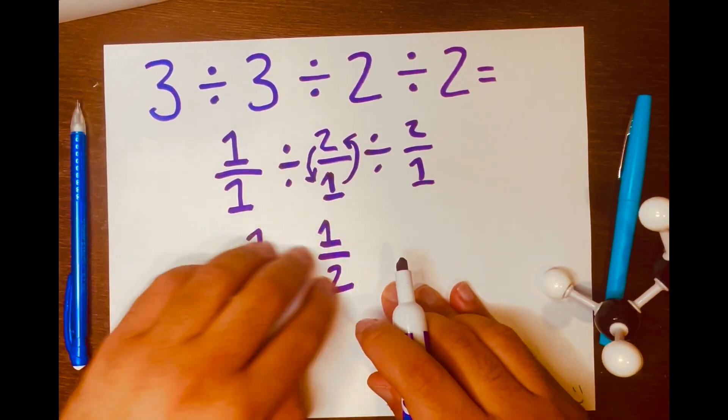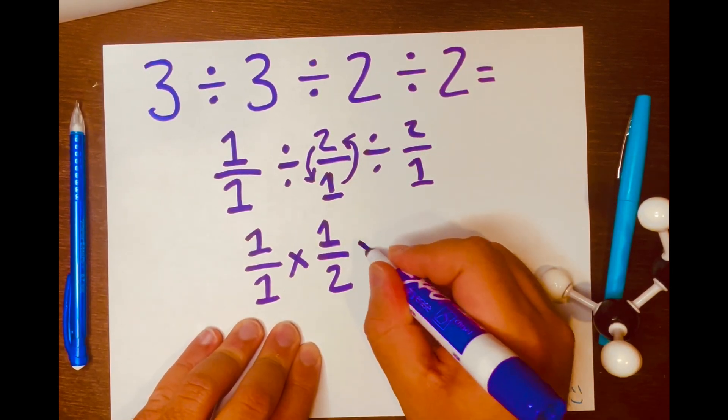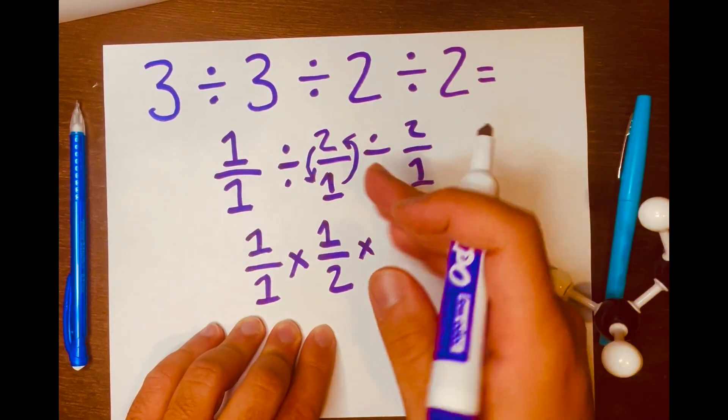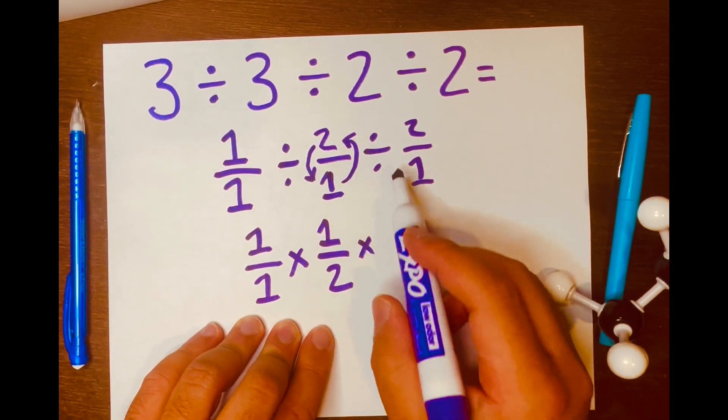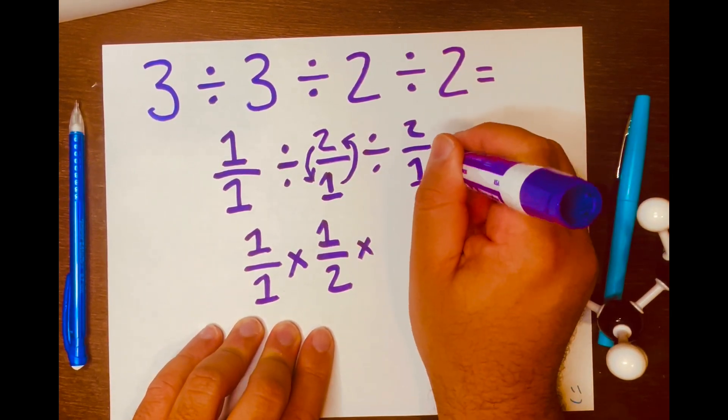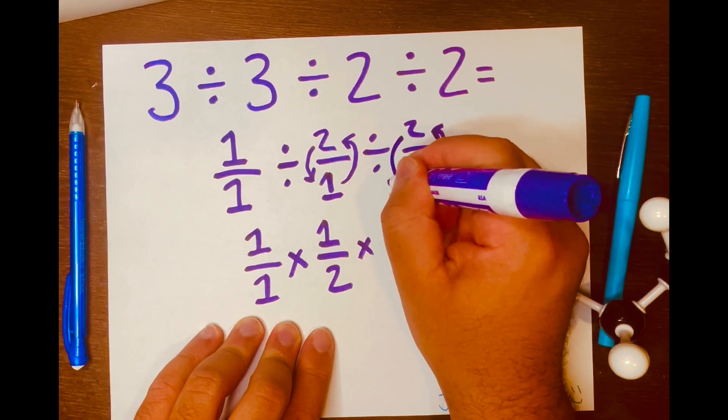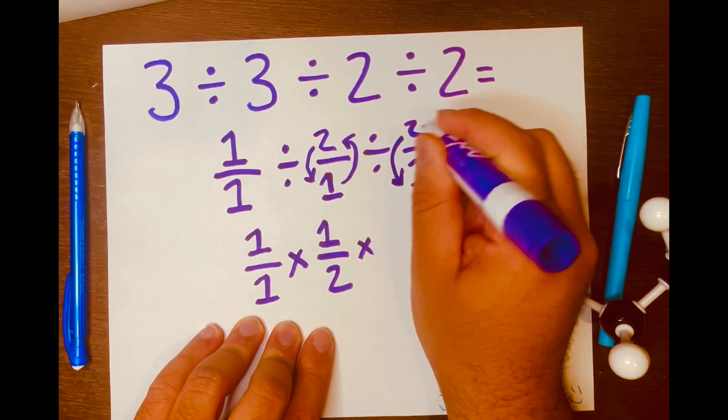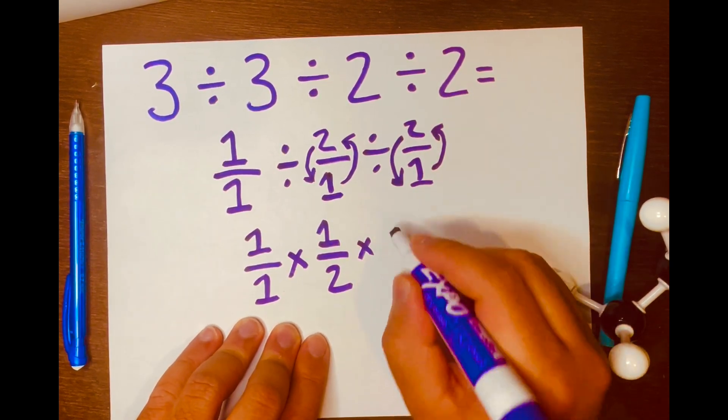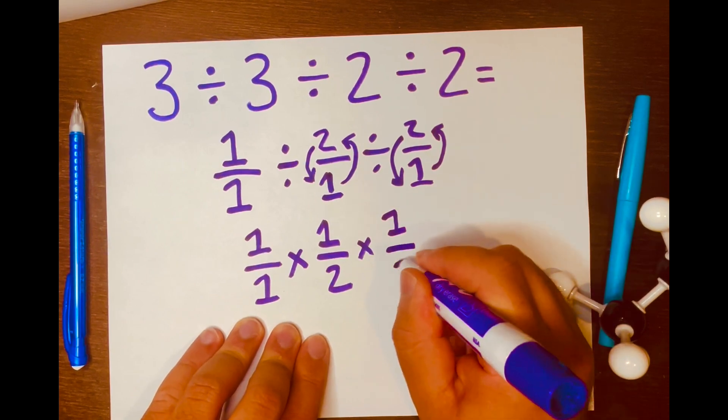And then we'll get an answer and then this division symbol will change to a multiplication because we'll use the same method, keep change flip. And then we'll flip this fraction as well. So the 2 will go at the bottom and the 1 will go on top of the fraction. So it'll be written like this. 1 over 2.